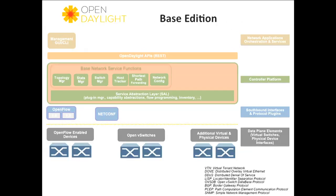This was the Base Edition. We figured the basic thing you needed was NetConf — because you need some way to configure devices — and then OpenFlow, because most controllers out there were OpenFlow-only. So the idea was: you'd have the base edition, then add stuff to make Virtualization and Service Provider editions.